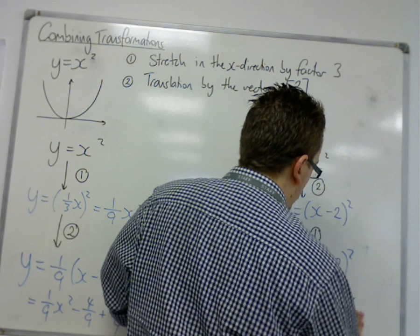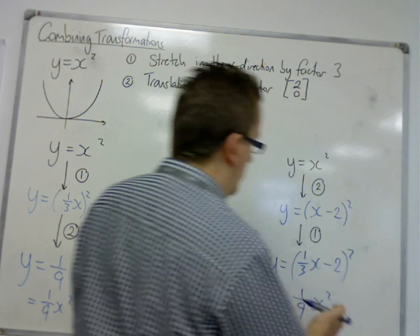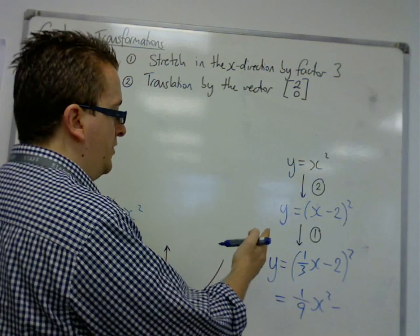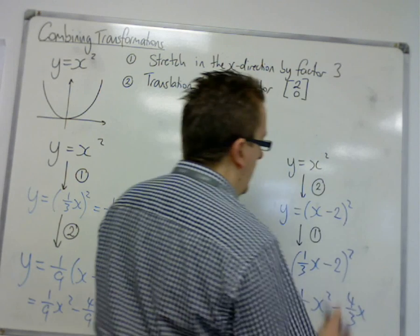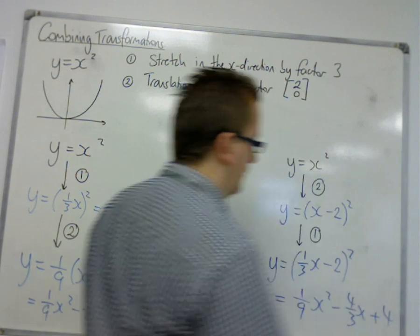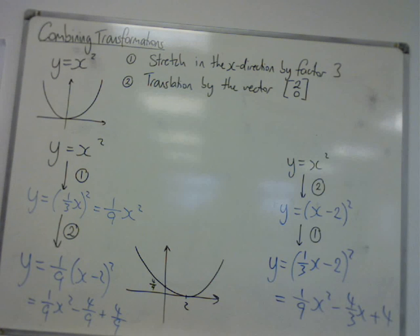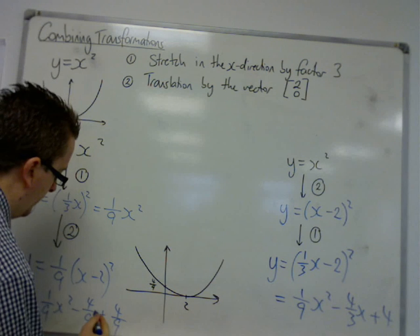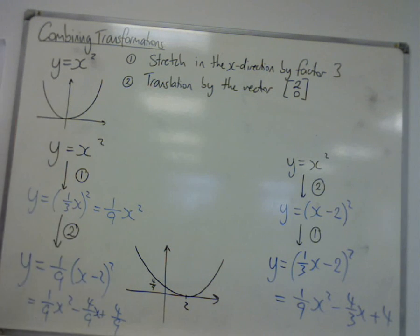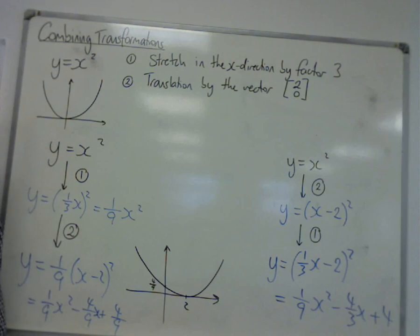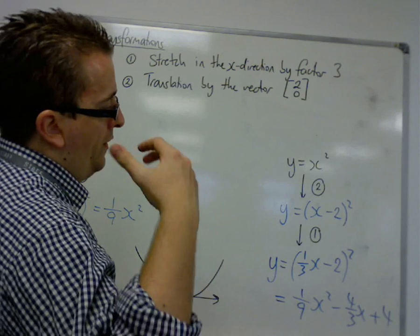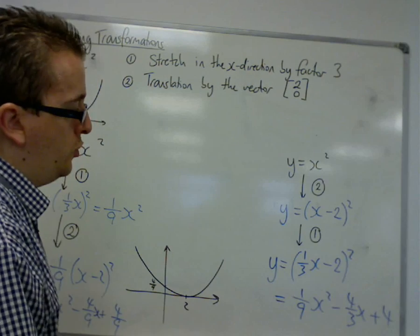is 1 ninth x squared minus 2 thirds x plus 4. So you can see now, this time, this equation is different to this one. So, certainly, the order of transformation mattered.